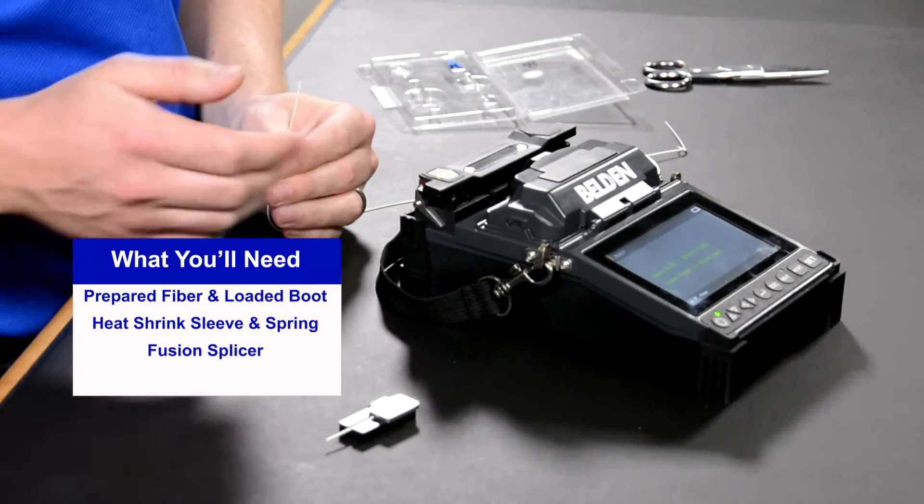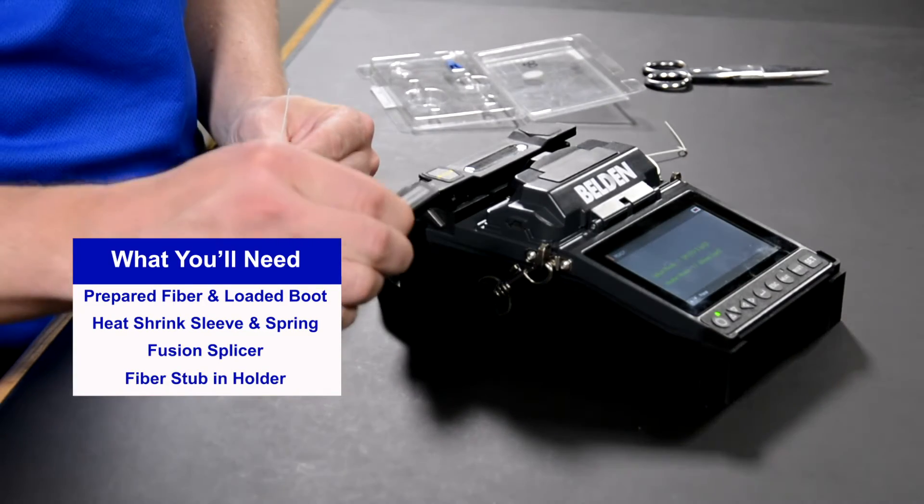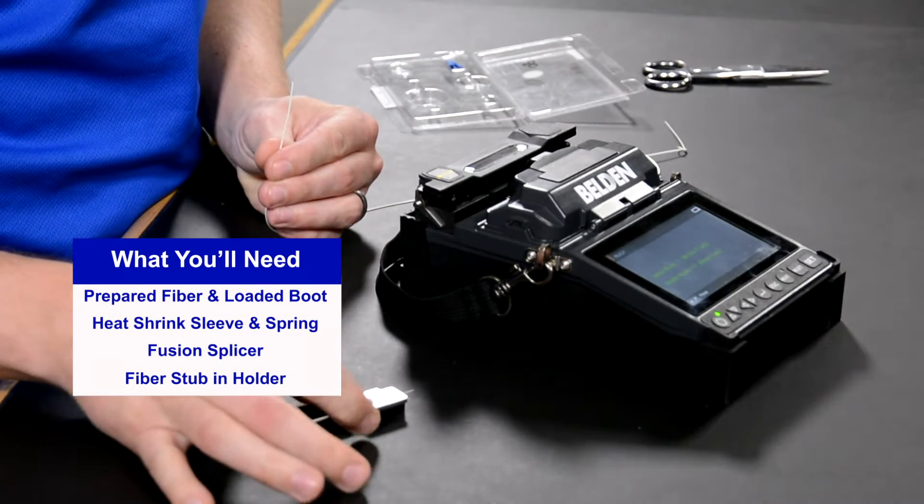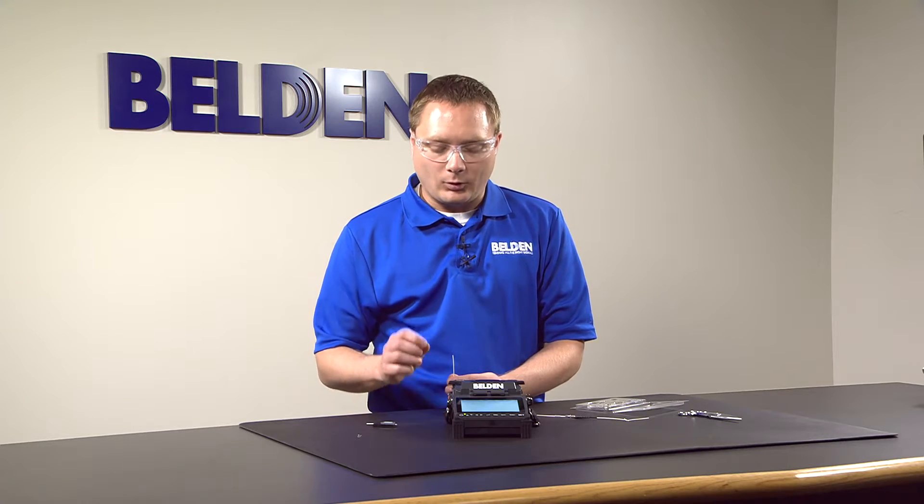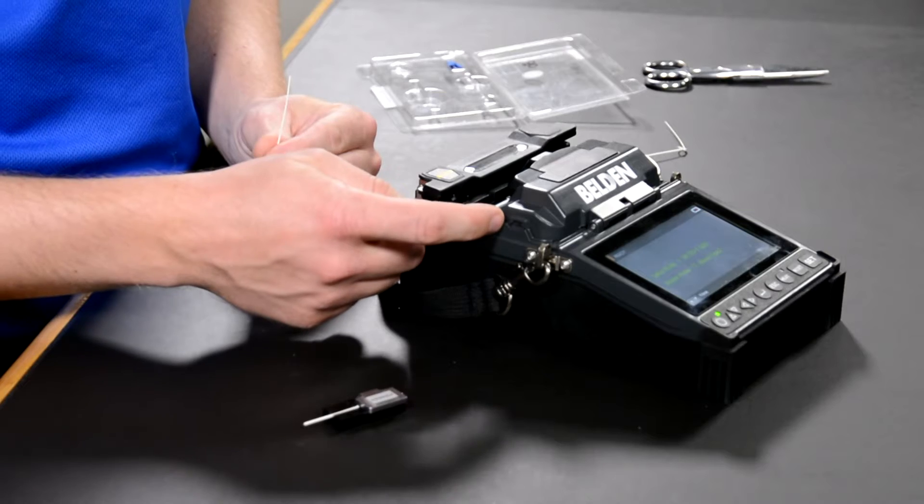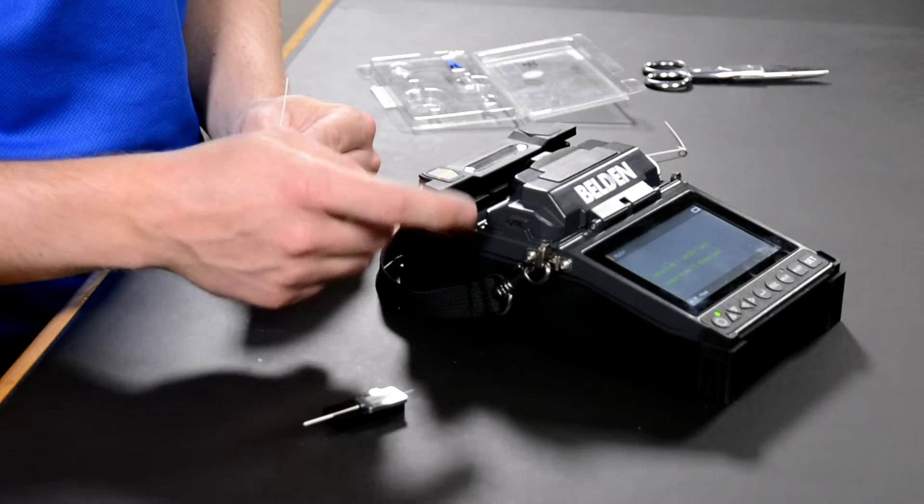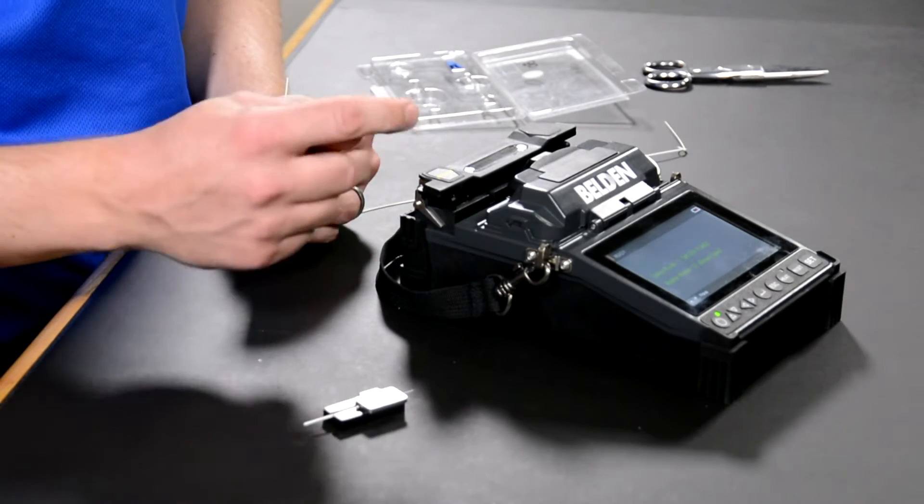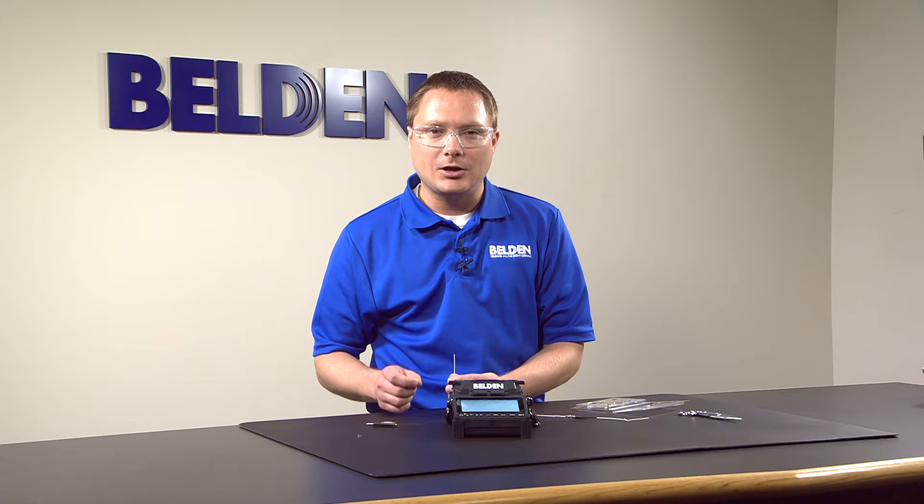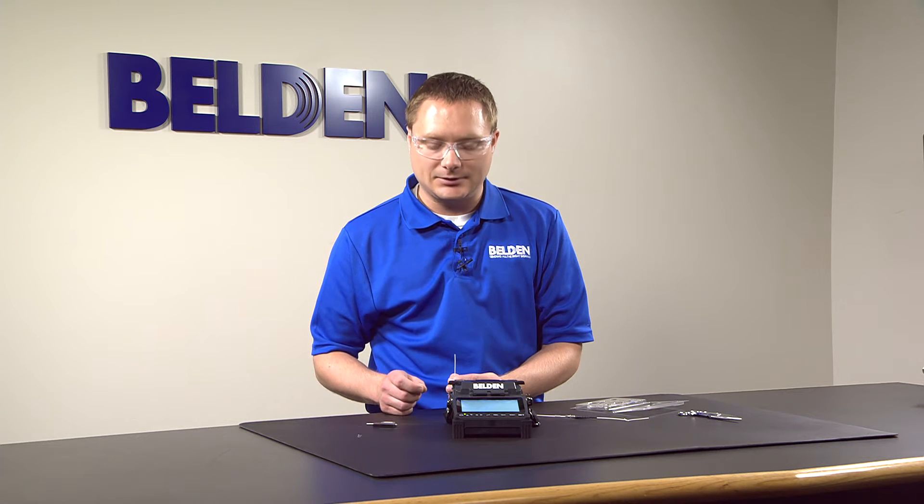We'll need a fusion splicer and we'll need our fiber stub already loaded into a holder from the previous step. Now please make sure whatever splicer you're using that your splice settings are set properly for the connector and fiber that you're using as well as your oven settings. Please refer to the installation guide with your connectors for those correct settings.